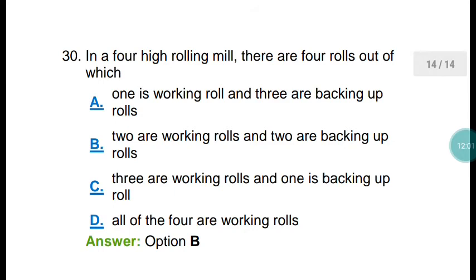Question number thirty: in a four-high rolling mill, there are four rolls — two working rolls and two backing-up rolls. The correct answer is option B.